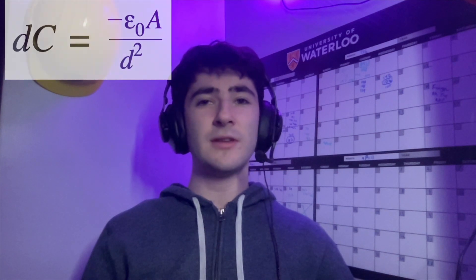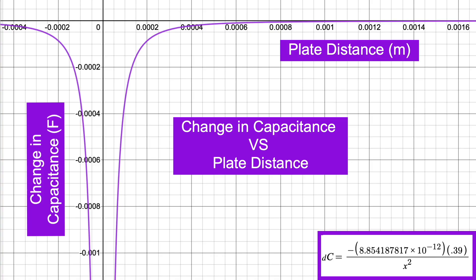To measure the sensitivity of the capacitance, we can take the derivative of the capacitance equation to get the rate of change of the capacitance, which will give us this equation. When we plug in the variables, we can get a nice graph and a nice equation for the change in capacitance.